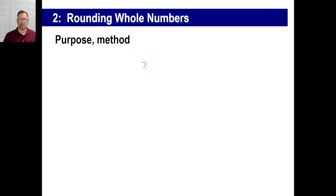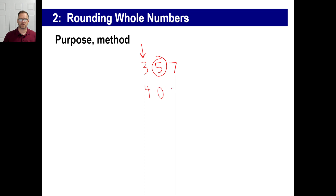The method we use to round numbers: let's say you're rounding to the nearest hundred. Find which digit represents the hundreds place — ones, tens, hundreds, that's it. Then look to the right at that digit. If it is five or greater — five, six, seven, eight, or nine — you round this number up. Everything else to the right of that you turn into zeros.